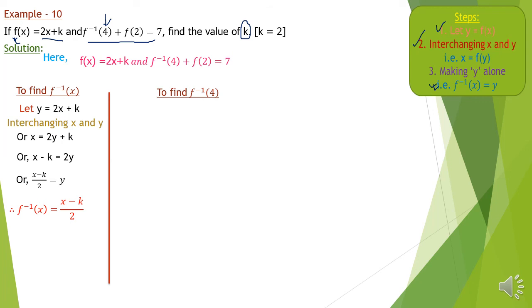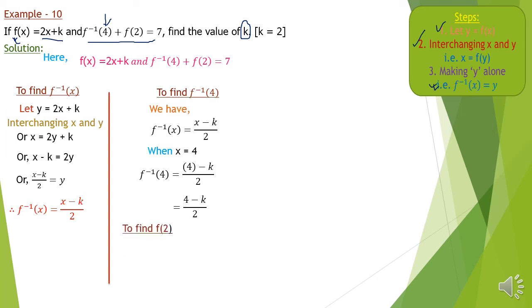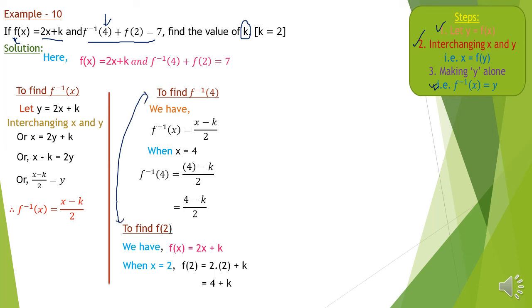To find f⁻¹(4), our input is 4. We have f⁻¹(x) = (x−k)/2, so x is replaced by 4: f⁻¹(4) = (4−k)/2. Now we also need to find f(2). In the function f(x) = 2x+k, when x = 2, f(2) = 2(2)+k = 4+k. Now we have both values and we can use the condition.